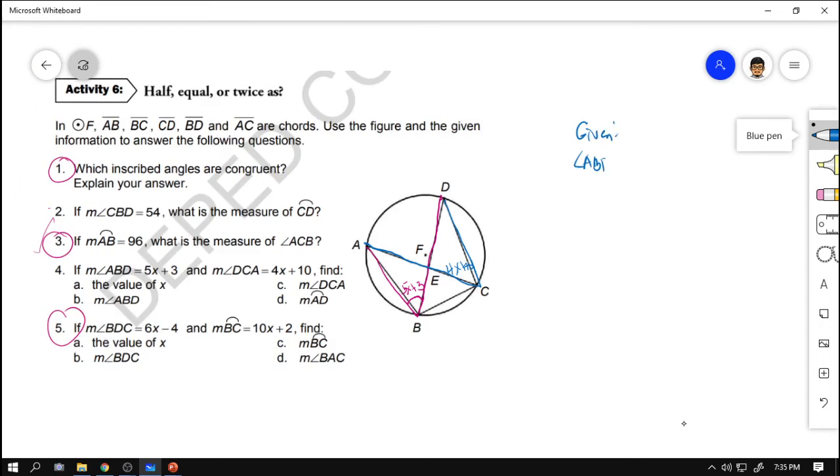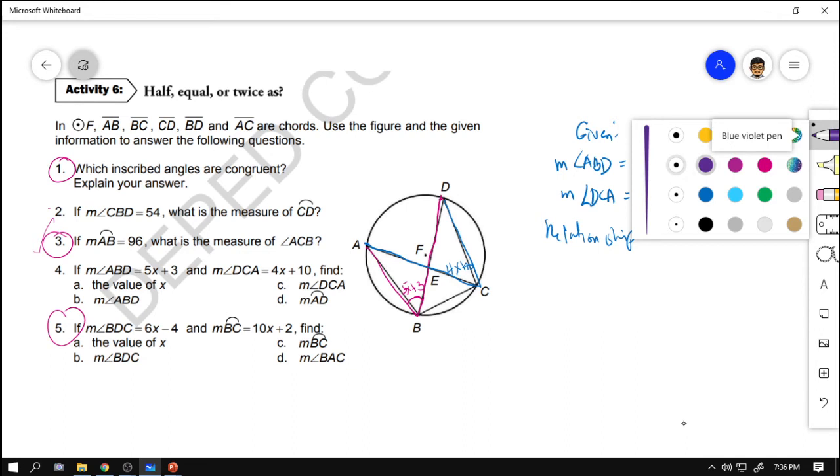Angle ABD, the measurement of angle ABD is equal to 5X plus 3, and the measurement of angle DCA is equal to 4X plus 10. Our relationship: what is the relationship between angle ABD and angle ACD? As you can observe, si angle ABD at saka si angle ACD have the same intercepted arc. Okay? Ano yung intercepted arc nilang pareho? Ito. Sabi ng theorem, two angles will be congruent if they share the same intercepted arc.